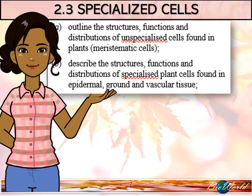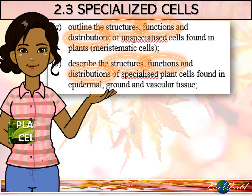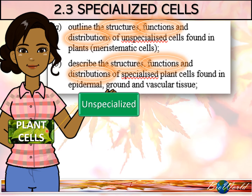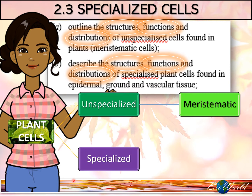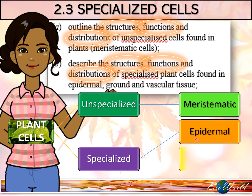According to the STPM syllabus, we need to know the structure, function, and distribution of specific plant cells. Plant cells can be categorized as unspecialized plant cells, which involve the meristematic cells, and specialized plant cells. There are altogether three tissues that fall under the specialized plant cell category, which are epidermal tissues, ground tissues, and vascular tissues.